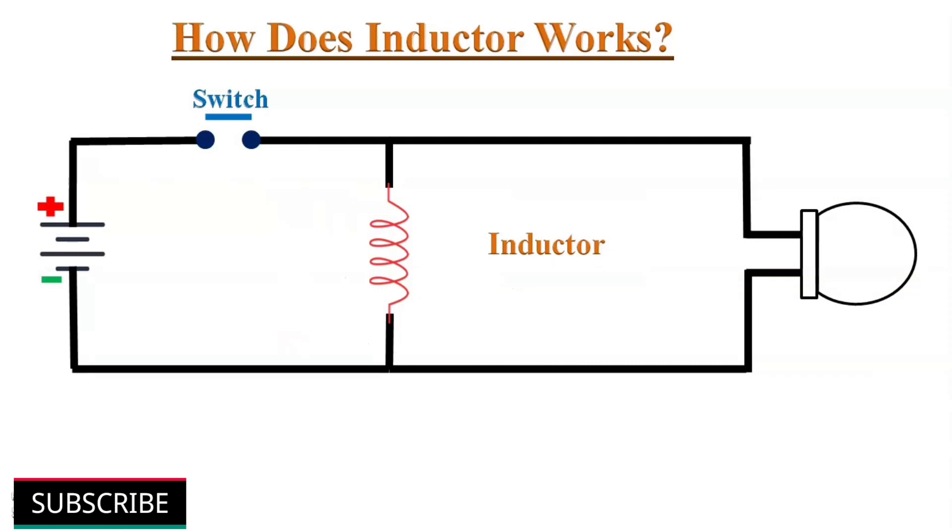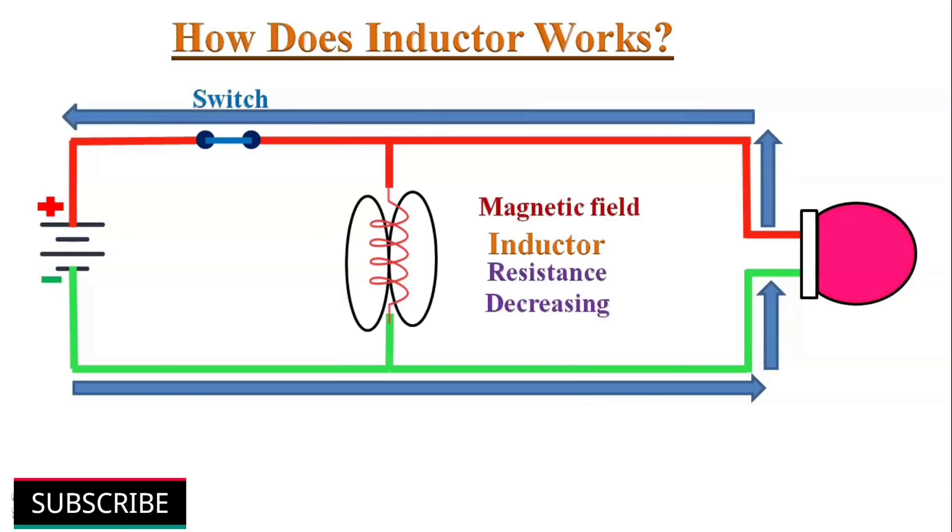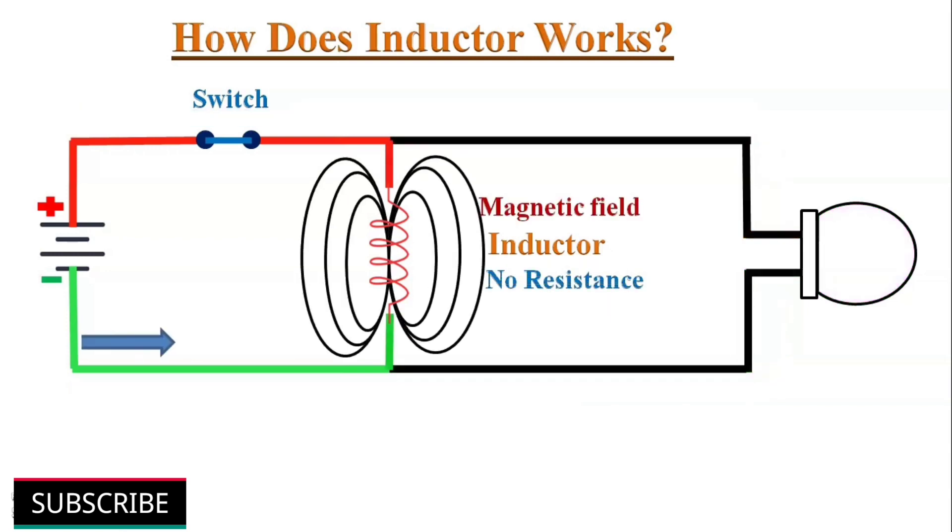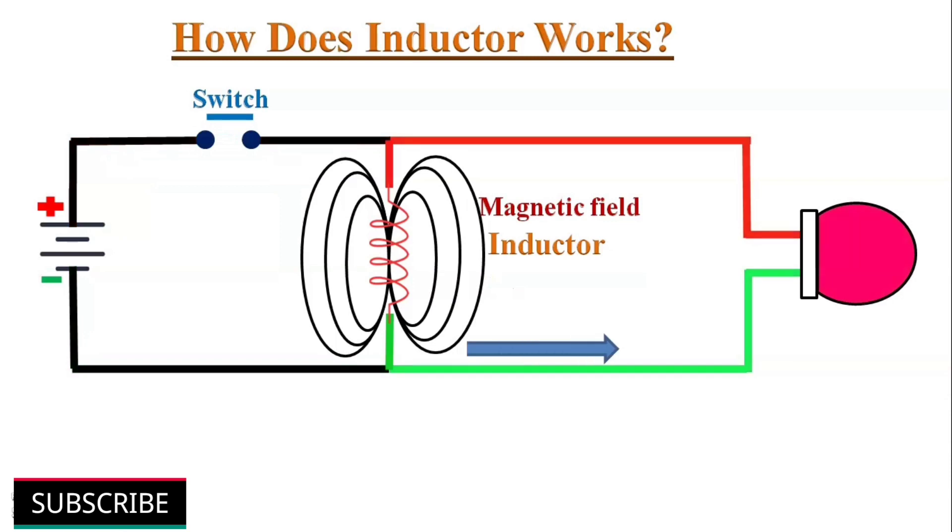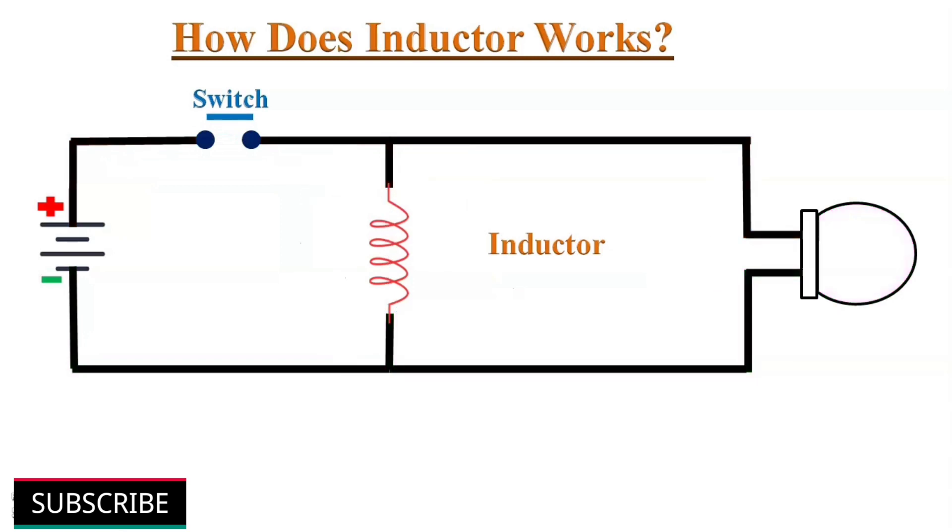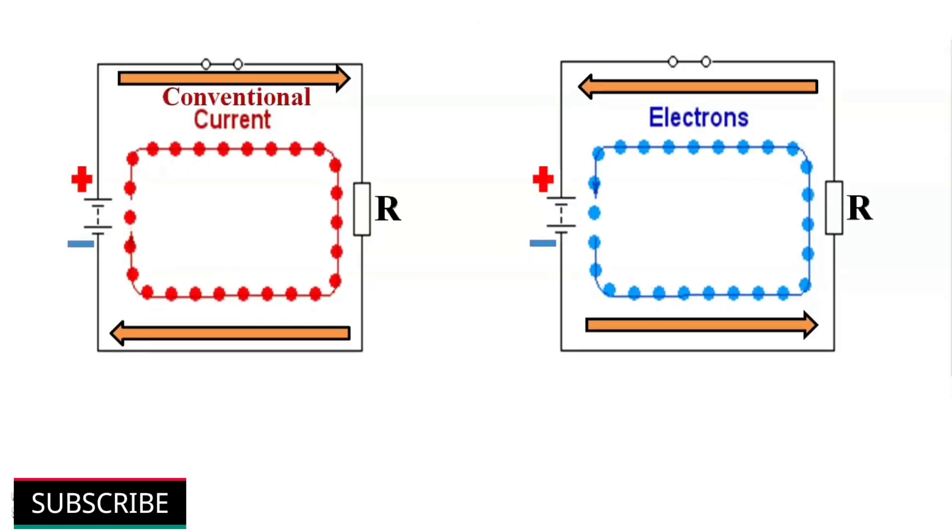In reality, it's going to happen very fast when we power on and off this circuit. We have just slowed down the animations to make it easier to see and understand. Please note that we are using flow of electrons, which is from negative to positive, but you might be used to seeing conventional flow, which is from positive to negative.